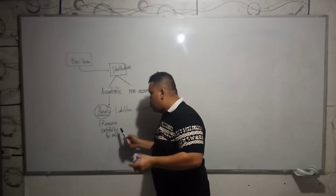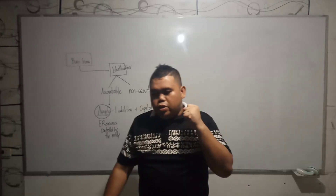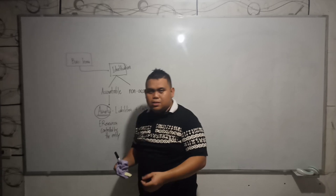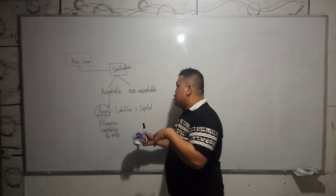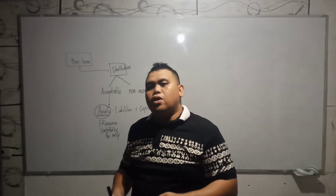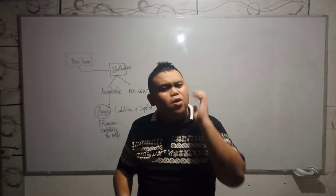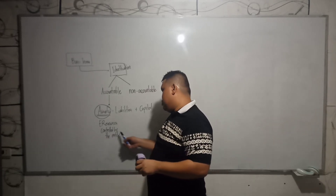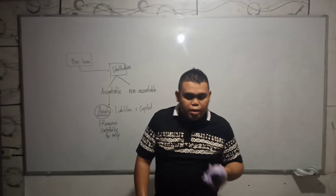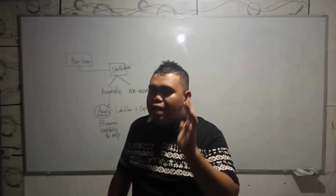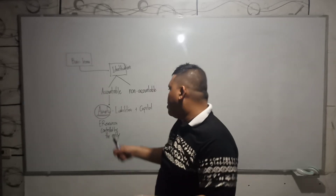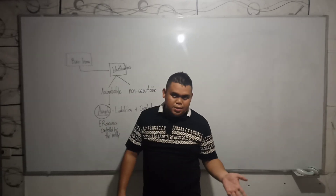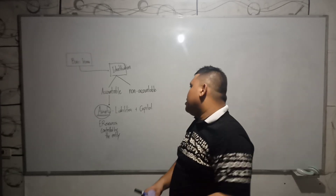Examples of assets are the buildings of the company, the machinery, the supplies, the inventories, and especially the cash of the company — those are economic resources controlled by the entity. It does not need to be owned by the entity to be considered an asset. Assets can still be considered assets of the entity as long as it controls the benefit of those assets.